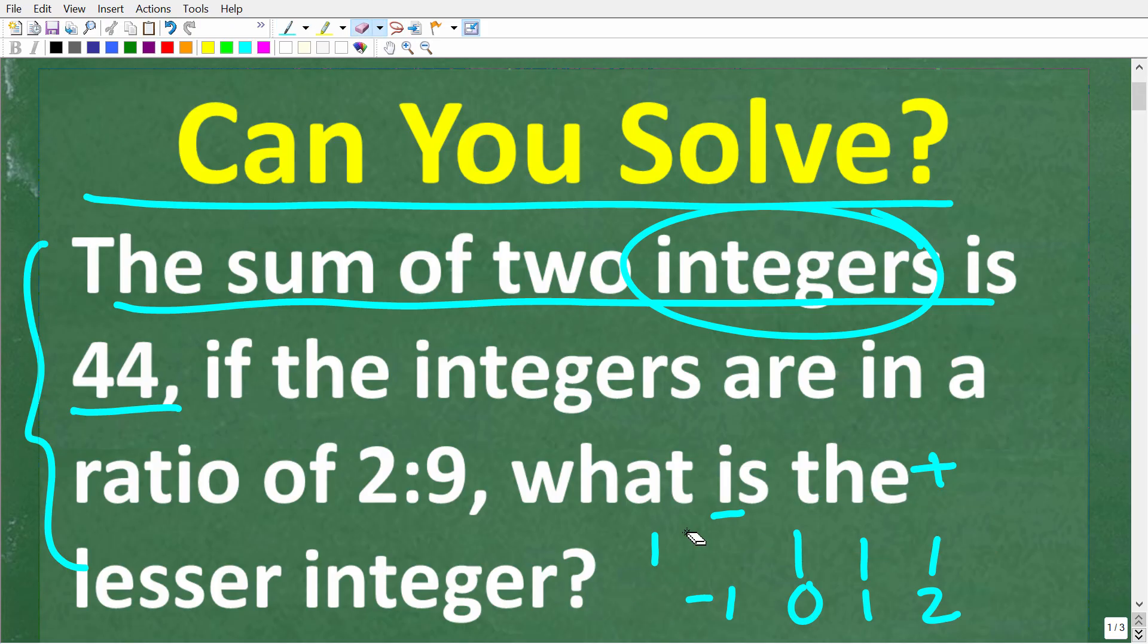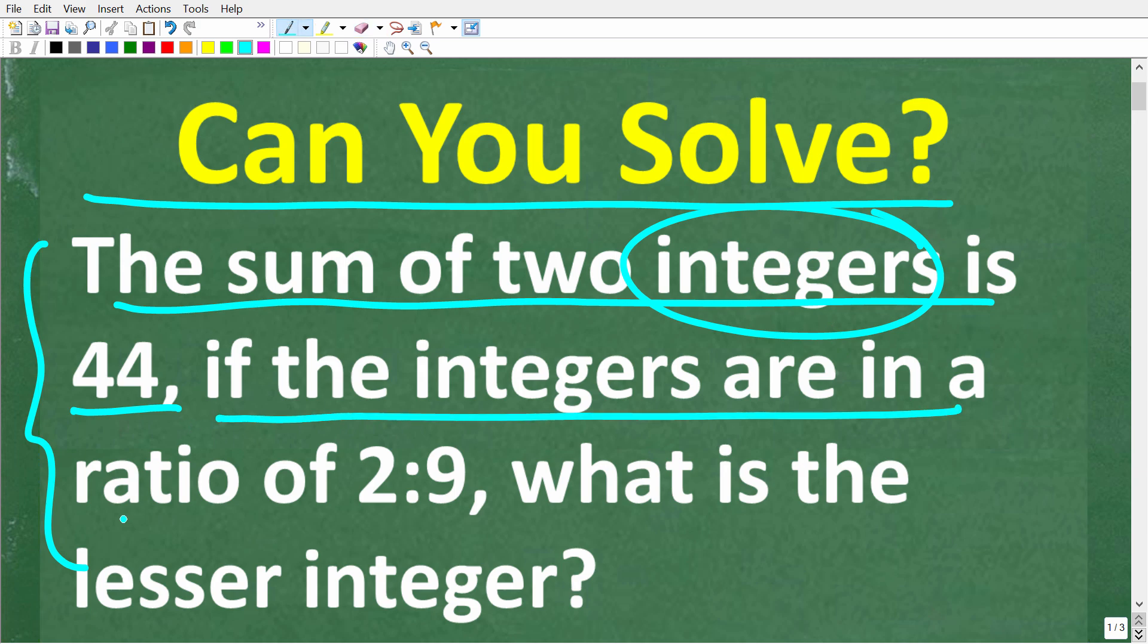These numbers here are called the whole numbers. So we're talking about both the positive and negative whole numbers. That is an integer. So again, the question is the sum of two integers is 44. If the integers are in a ratio of 2 to 9,